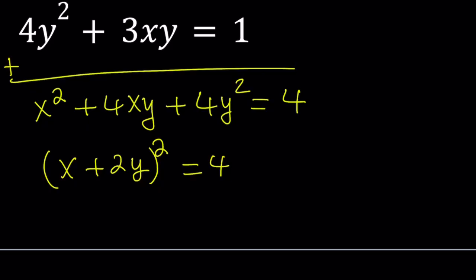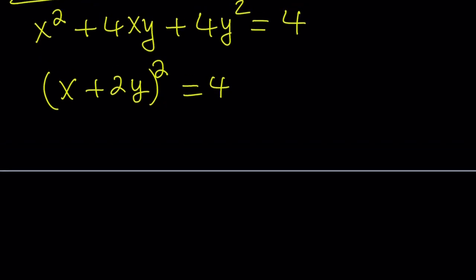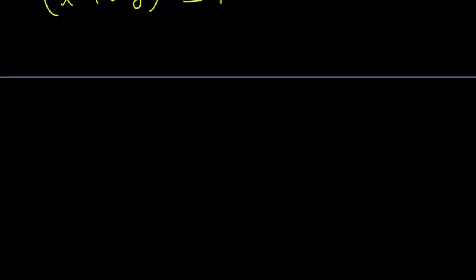And this has two solutions. There are two numbers whose square equals 4 and those numbers are 2 and negative 2. So we're going to be looking at each case. Let's go ahead and do the following. We're going to square root both sides.